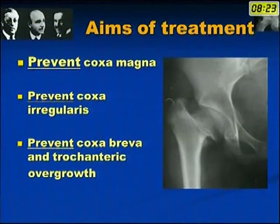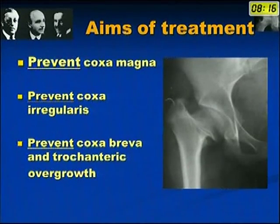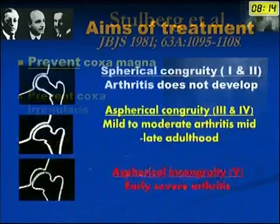The three aims are to prevent coxa magna, coxa irregularis, coxa breva, and trochanteric overgrowth.